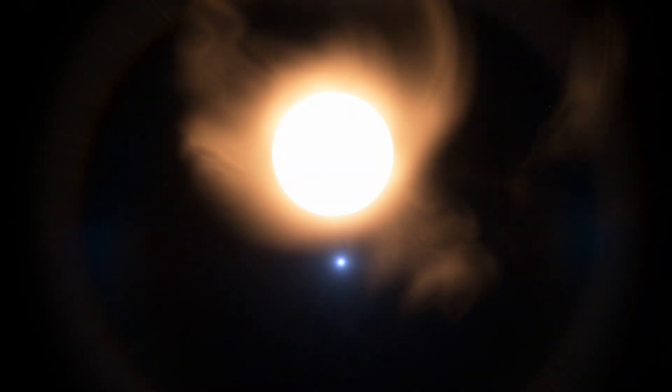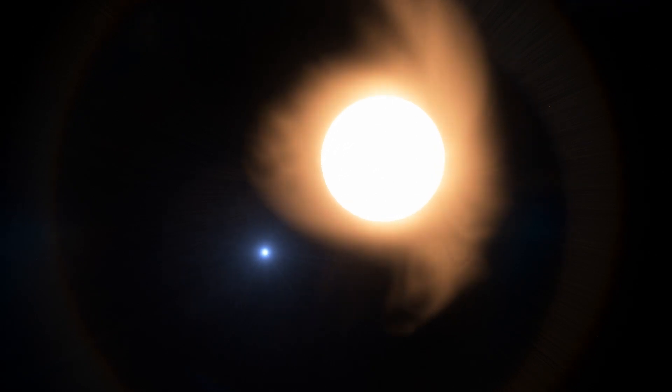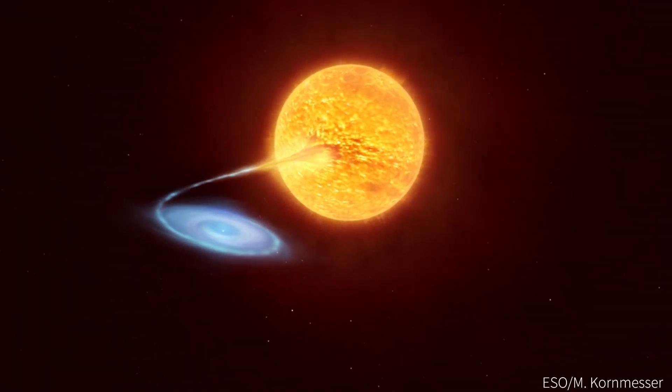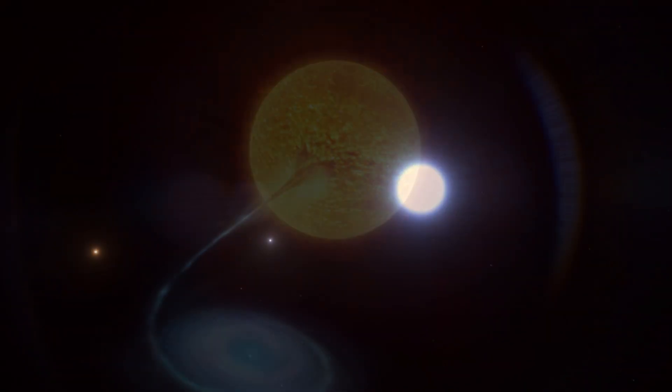Finally, as the main sequence star in the inner binary starts to evolve off the main sequence, its outer layers expand, however they are very quickly siphoned away by the neutron star, producing another very light, low mass white dwarf, which we observe today as the inner puffy white dwarf.